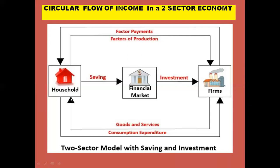Till here we discussed part one of national income. Now we introduce saving and investment. Households save a part of their income and deposit it in banks or financial institutions, which we refer to as the financial market. So savings flows from households to the financial market. Firms, in order to undertake the production process and produce more, do investment — borrowing money from the financial market.